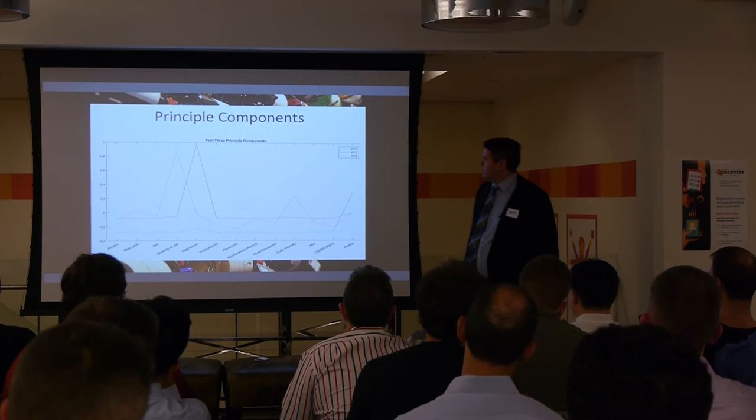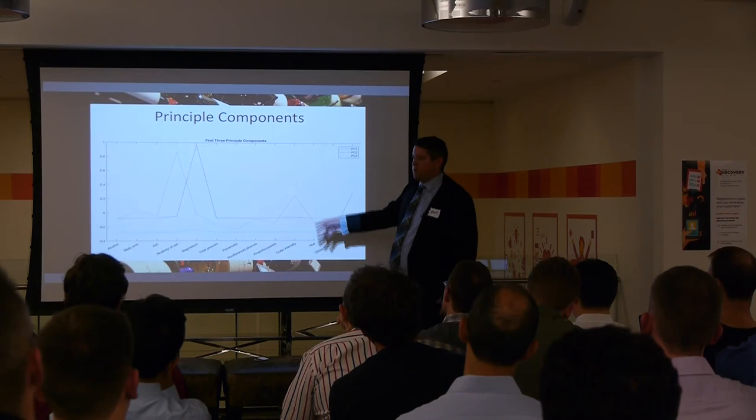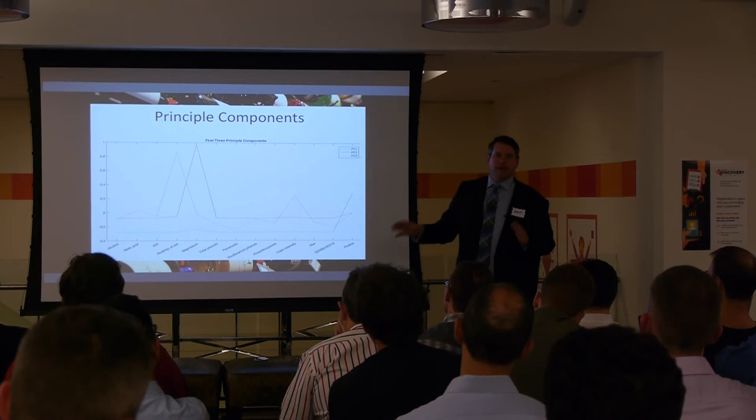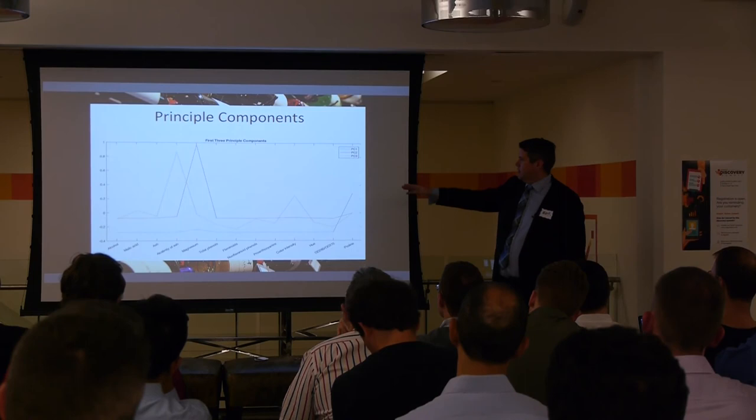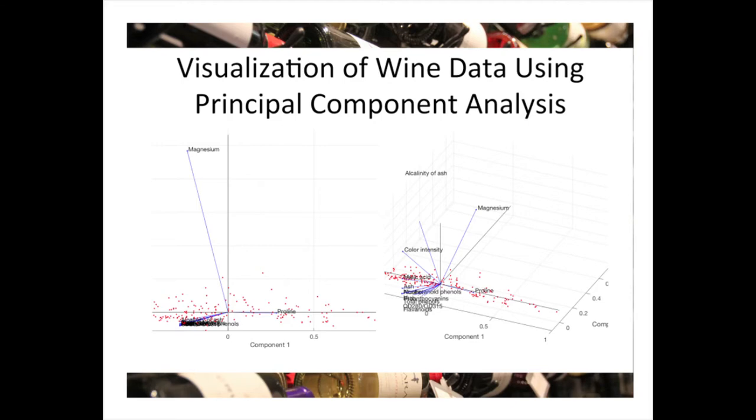The second principal component is RAMA — that's magnesium. The third component starts getting all kinds of different effects, but we've already explained probably 80–90% of all variance in our data. The third has a little color intensity and some alkalinity of ash. Features with no significant loading don't really predict the output. Now that we've reduced it, we can try to visualize the data again.